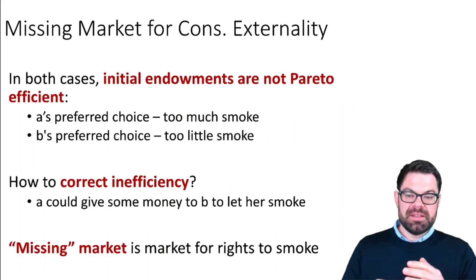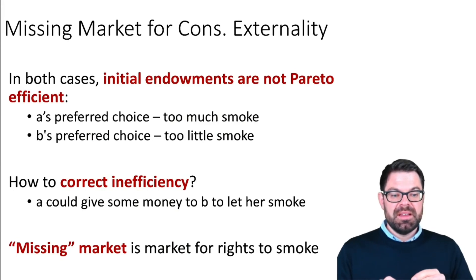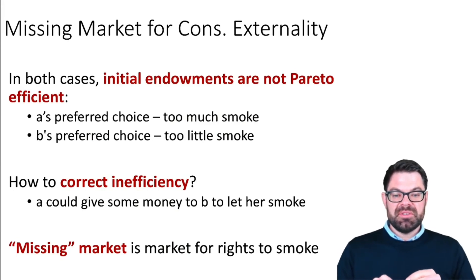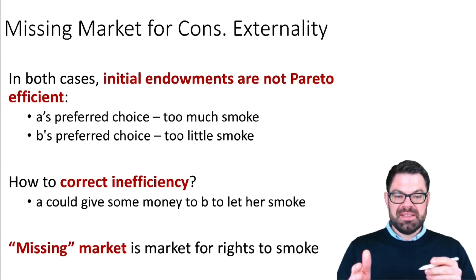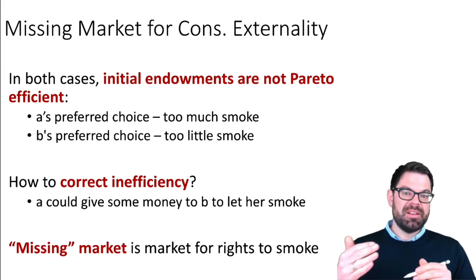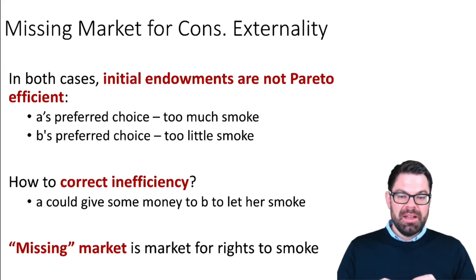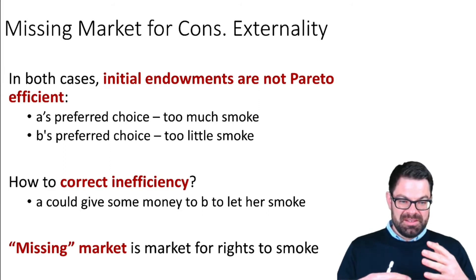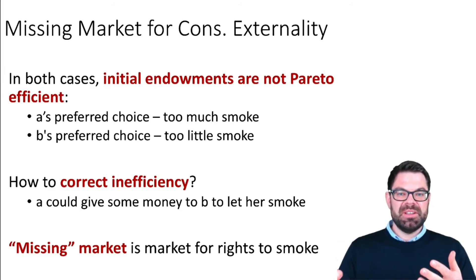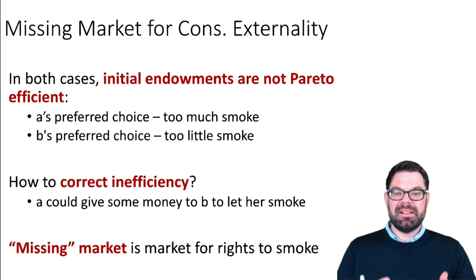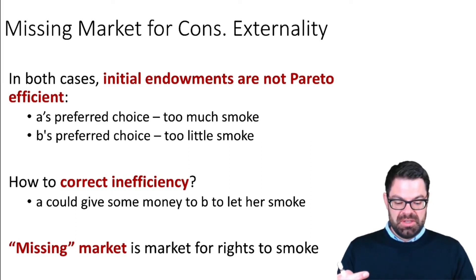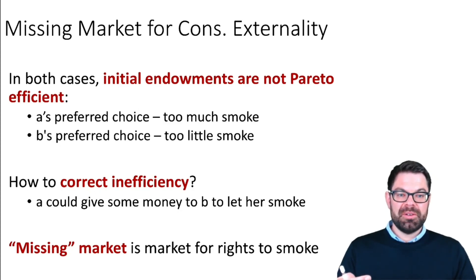To summarize: we have a missing market here, which is the market for the rights to smoke. But there can still be negotiations between those involved that correct for this externality and arrive at a Pareto efficient solution. How this is done will be discussed in the next video.